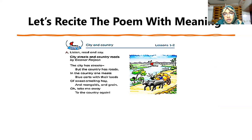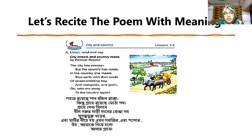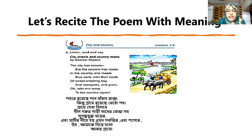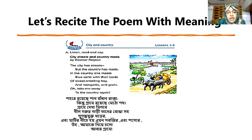Here again is the poem. Let's recite the poem with meaning. City, Streets and Country Roads. The city has streets, but the country has roads. In the country, one meets blue cars with their loads of sweet-smelling hay and mangold and grain. In the country, one meets blue cars with their loads. Take me to the country again.